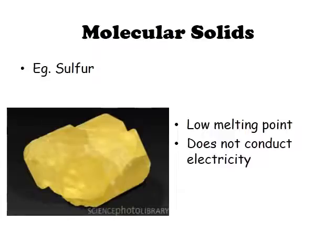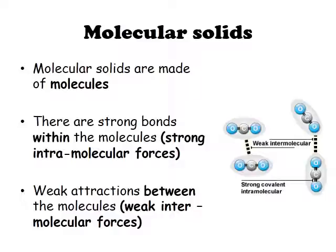Sulfur has a low melting point and does not conduct electricity. The reason why molecular solids have low melting points is that they are made of molecules. There are strong bonds within the molecules — strong intramolecular forces — but there are weak attractions between the molecules, known as weak intermolecular forces. As you can see from the diagram, carbon dioxide has a very strong bond between the carbon and oxygen — strong intramolecular bonding — but very weak intermolecular bonding between the CO₂ molecules.